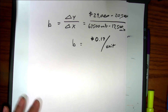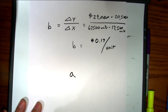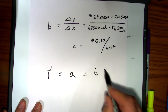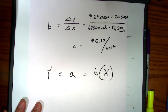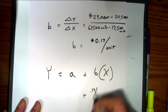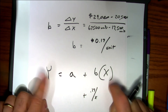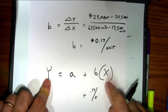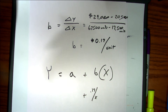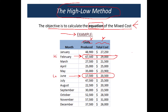The next step is to solve for A, which is our fixed cost. We're going to consider the entire equation of a mixed cost — we just solved for B. Now we're going to borrow the y and the x from either the high or the low point. I usually use the low one because it sometimes involves easier math.